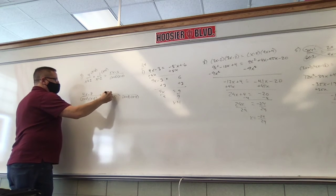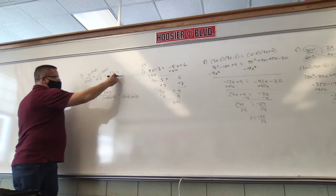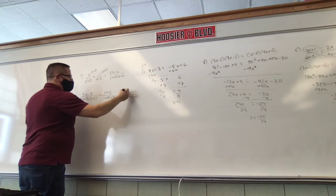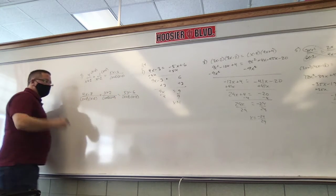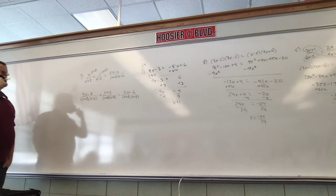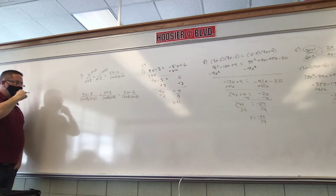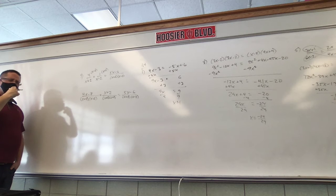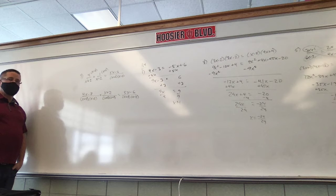To make the first fraction's denominator x plus 2 into (x plus 2)(x minus 2), we multiply top and bottom by x minus 2, giving 4x minus 8. For the second fraction with denominator x minus 2, we multiply top and bottom by x plus 2, giving x plus 2. The right side already has the same denominator, so leave 5x minus 6 alone.